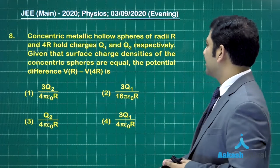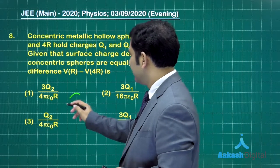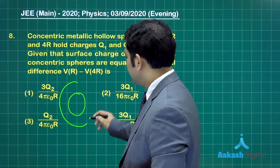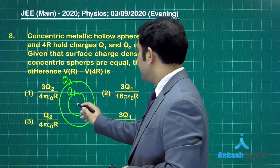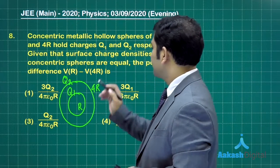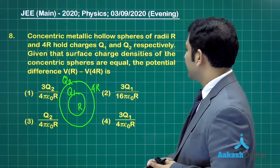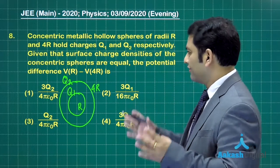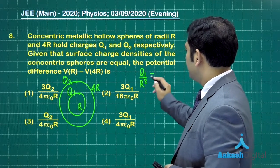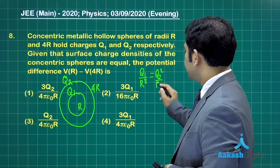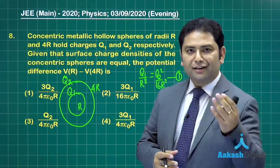Now let's go to question number eight. Concentric metallic hollow spheres of radii R and 4R hold charges Q₁ and Q₂. It's something like this is one sphere, this is another sphere - here is Q₁, here is Q₂, and the radii are R and 4R respectively. Now it says that the surface charge densities of the concentric spheres are equal. So we'll do that and based on that, Q₁/R² will be equals to Q₂/16R² - charge per unit area. That's the first condition.